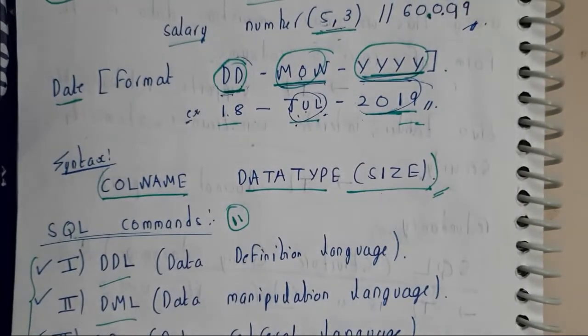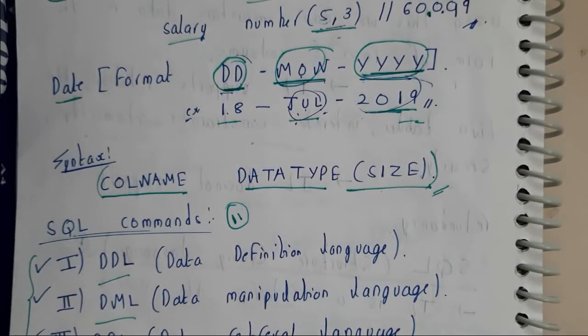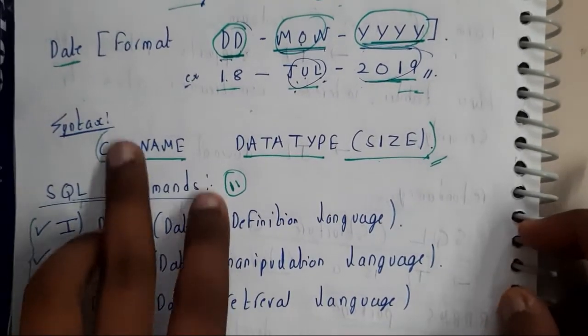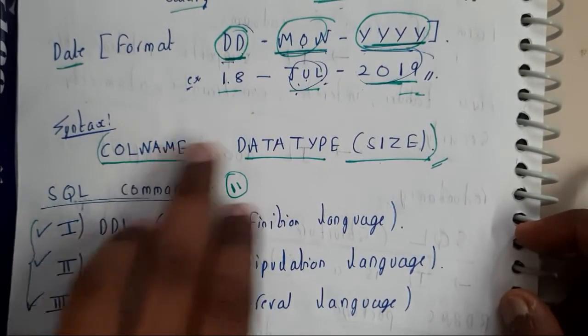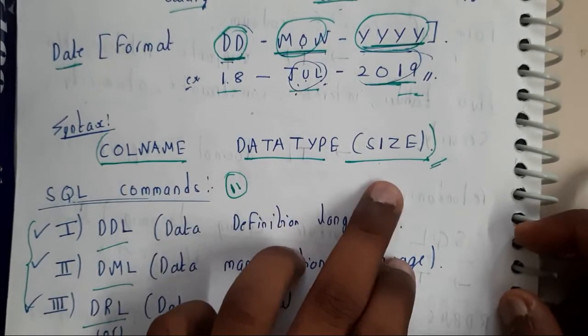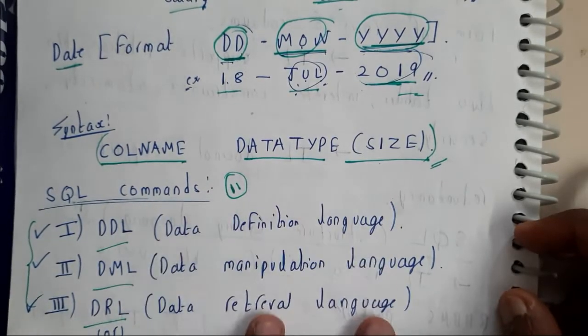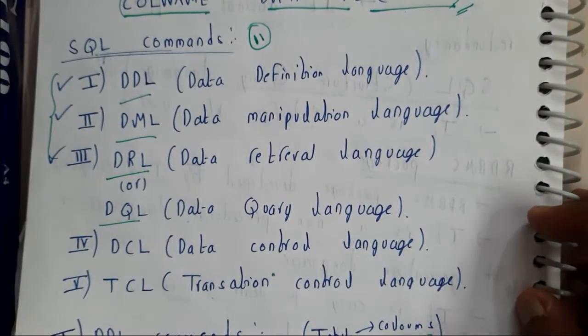The syntax for creating a data type is nothing but column name - we'll be giving a particular column name, its data type, and in bracket size. So I hope everyone got a small idea on this. So in the next tutorial, we'll be going through the SQL commands. Thank you, thanks for watching.